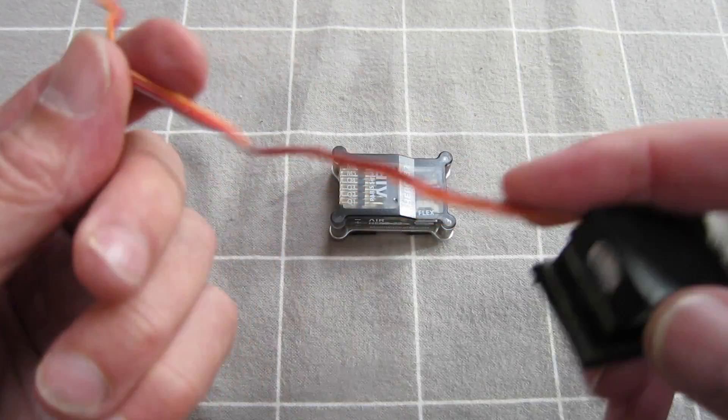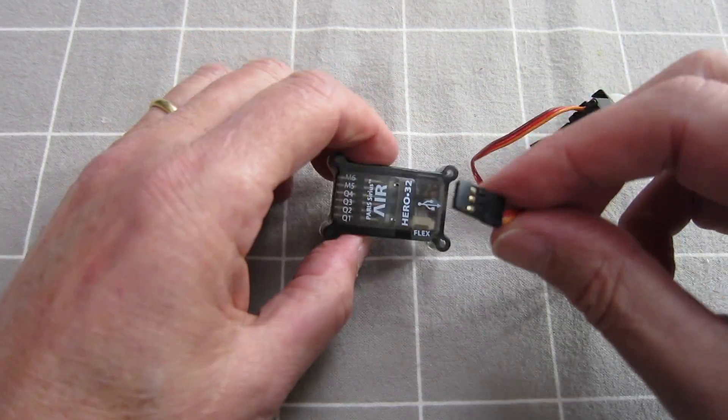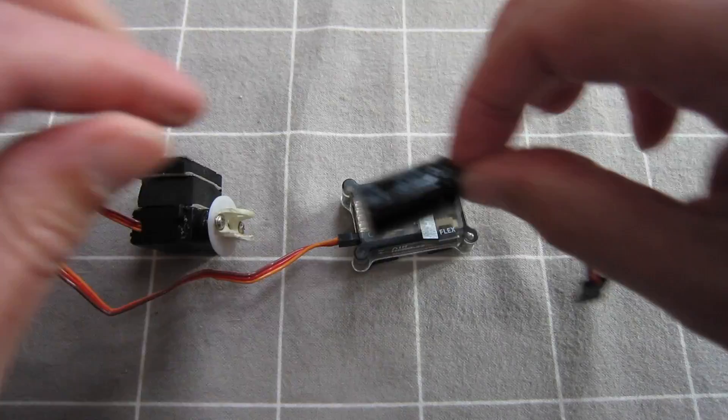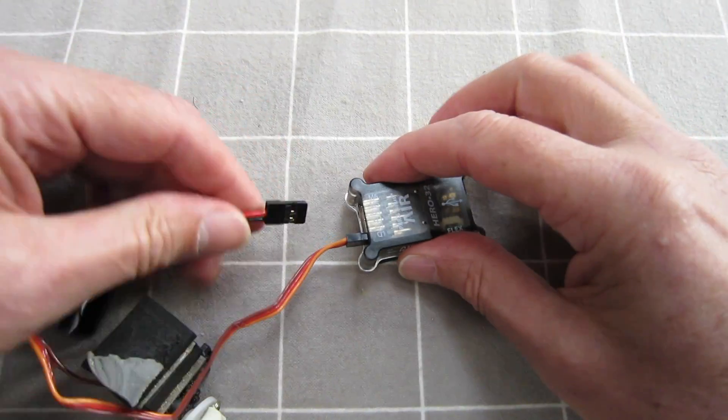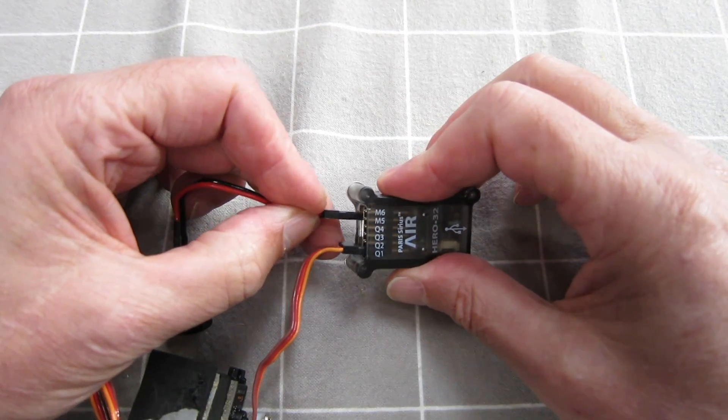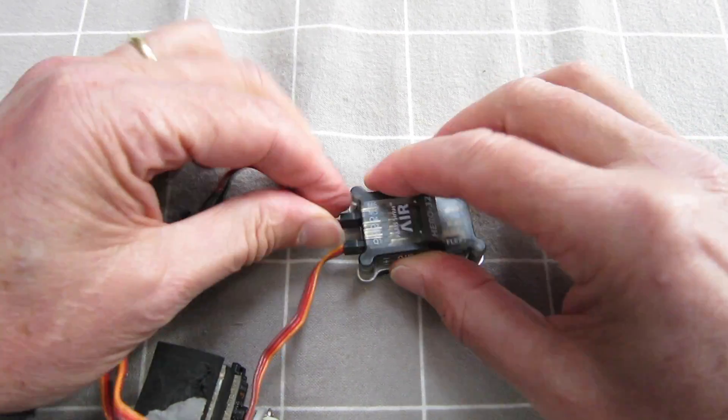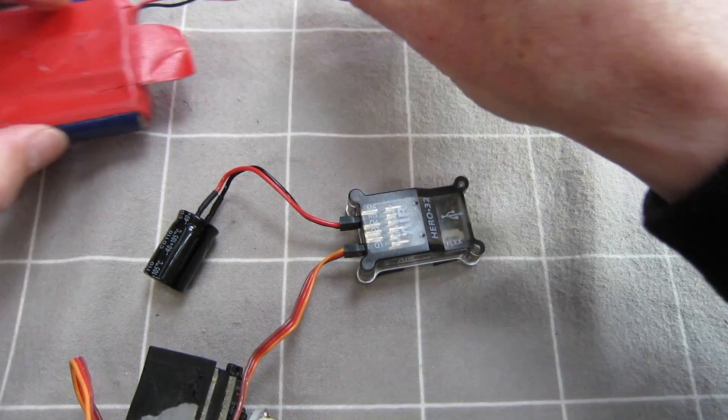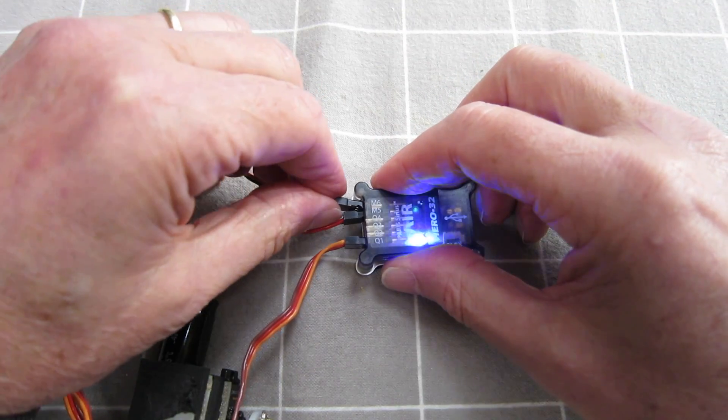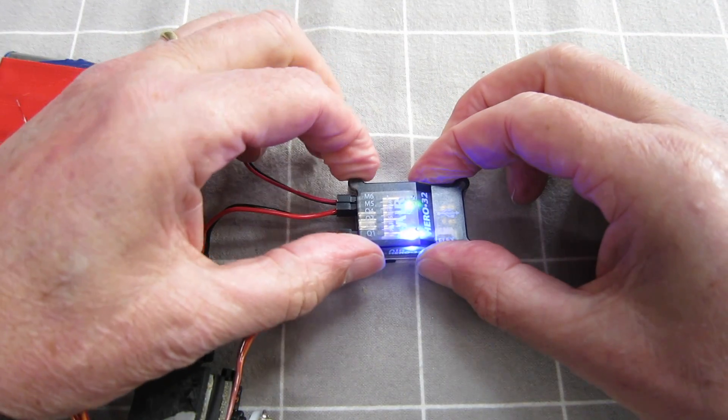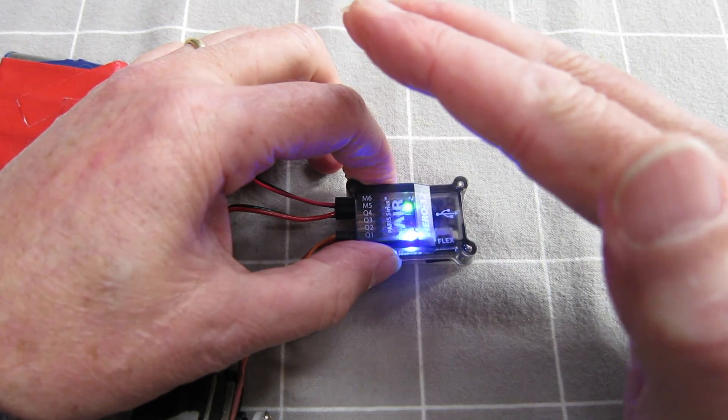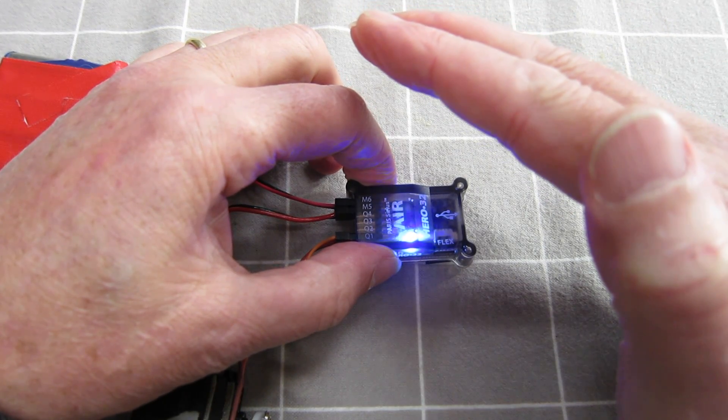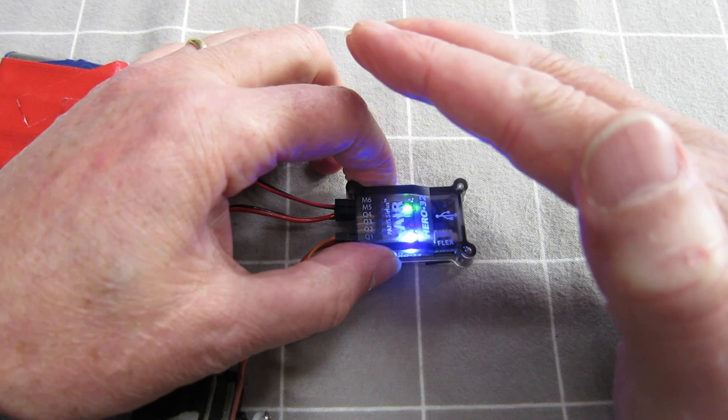So all you need is servo. Pitch servo is Q1. I've got a little capacitor here just to smooth things out, that goes into M5 and we plug 5 volts into M6. Hold it still, wait till the green light goes solid, bingo.